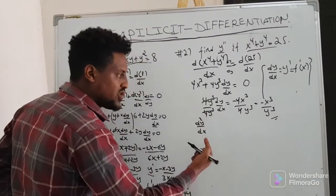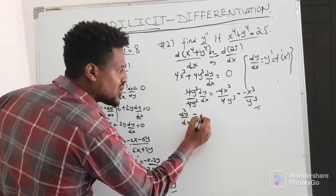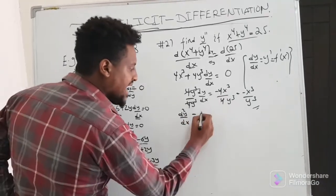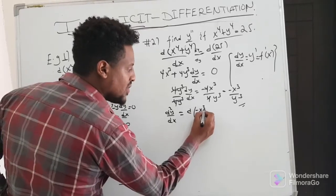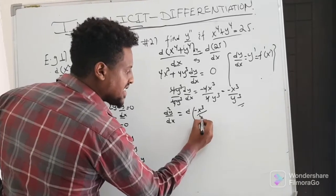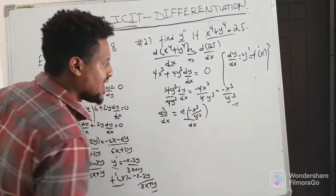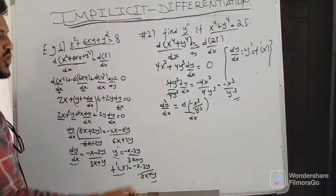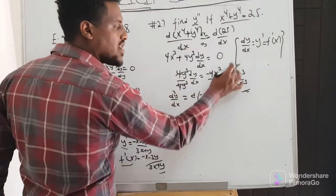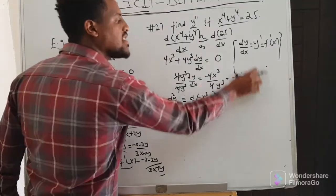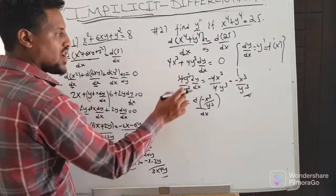If you have dy squared by dx, it is the second derivative. So d squared y by dx squared is the second derivative — the derivative of the first derivative dy by dx.